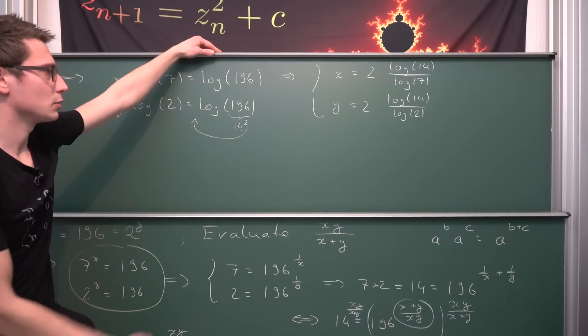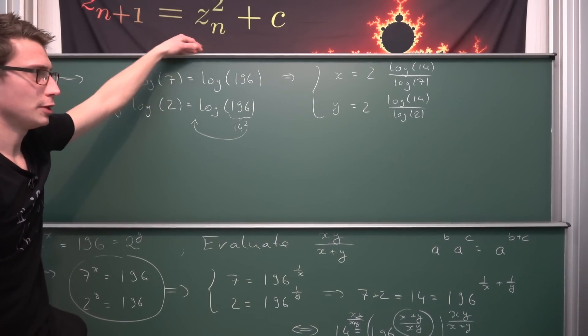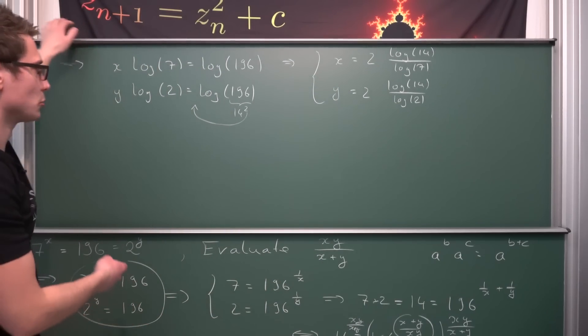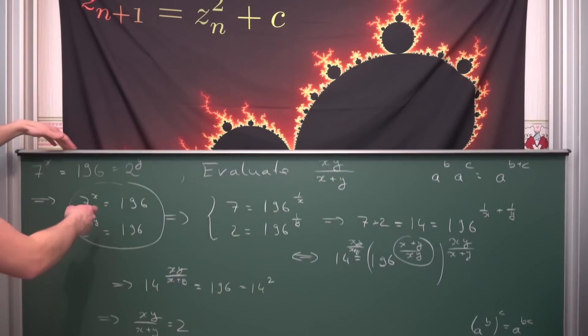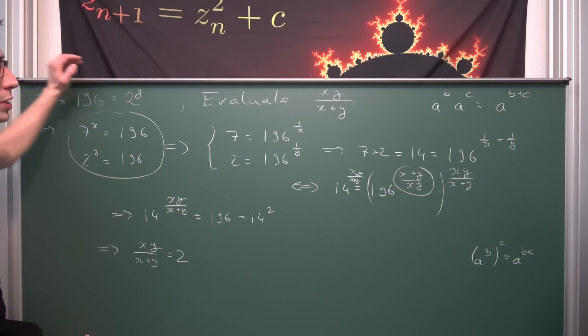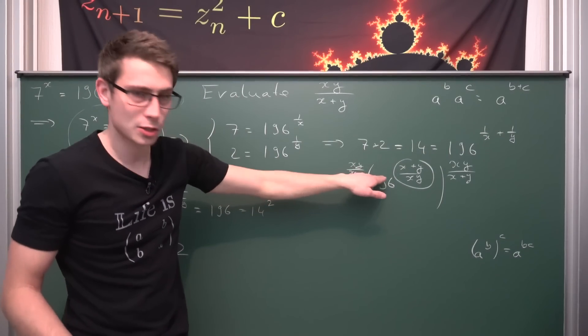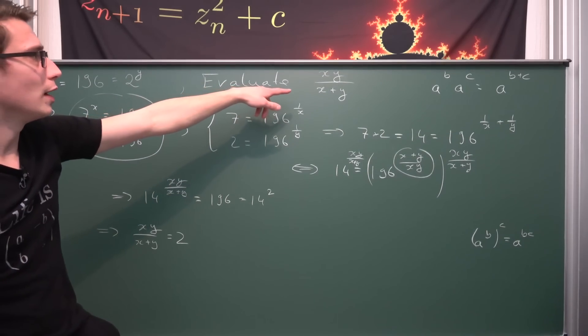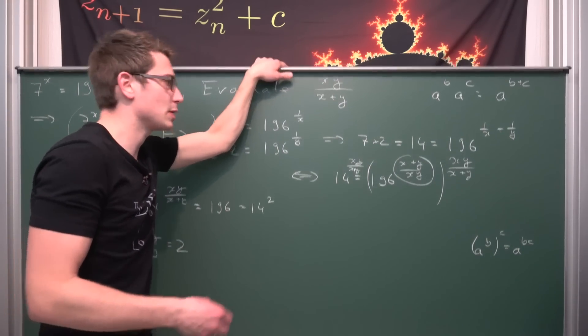And now we can go at this from many different angles. There are a lot of things to do so and this is what you would get after doing a change of base basically. Here if you just take the log of base 7 and log base 2. But what we can do is we could for example go back to this step that we did here and take the reciprocal once again of xy divided by x plus y.